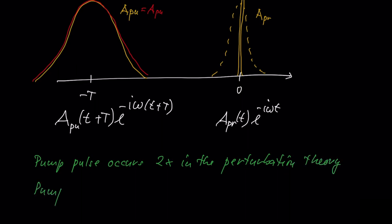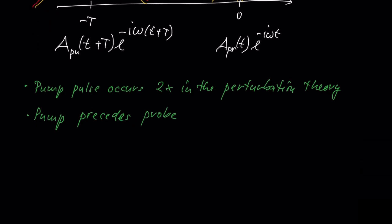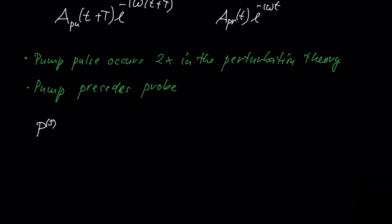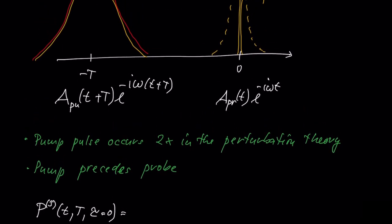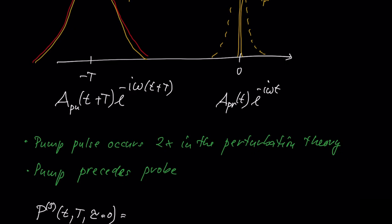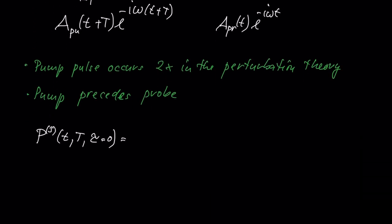It is very important that the pump precedes the probe. The third-order polarization assigned to this problem depends on the difference between the first and second pulse interaction, but those first and second pulses are exactly the same. We are thinking about pump-probe in terms of a three-pulse experiment — the first pulse of a pump-probe experiment represents the first two pulses of a three-pulse experiment. Pump-probe is still a third-order experiment despite only two pulses occurring in it.